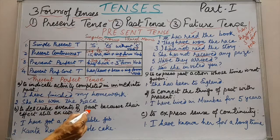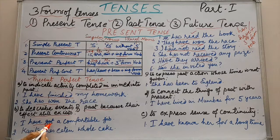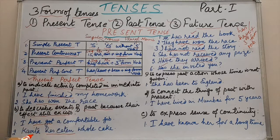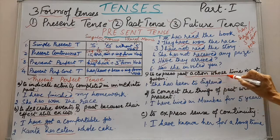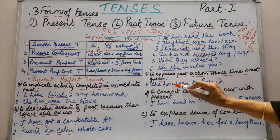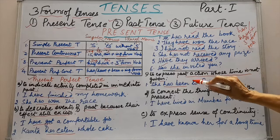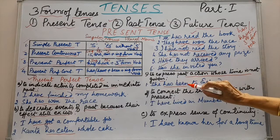Next, to describe events of the past because their effect still exists. Example: I have got a comfortable job — have plus third form of verb, and I am still having that job. Kavita has eaten the whole cake — she has finished it. Next, to express a past action whose time is not given. Example: she has been to England — has been, and the time or year has not been mentioned here.